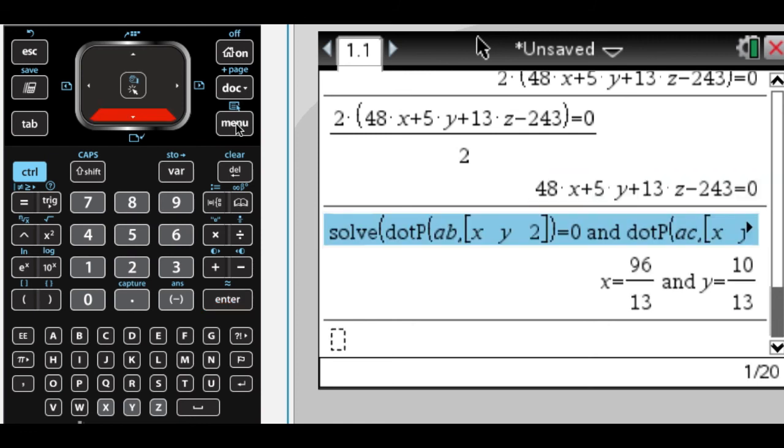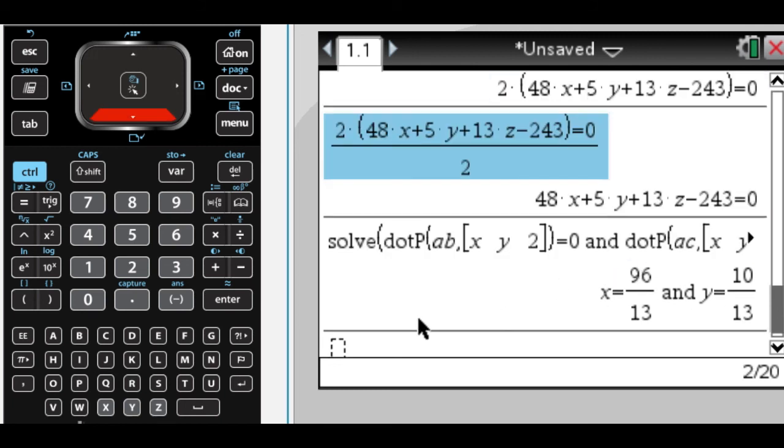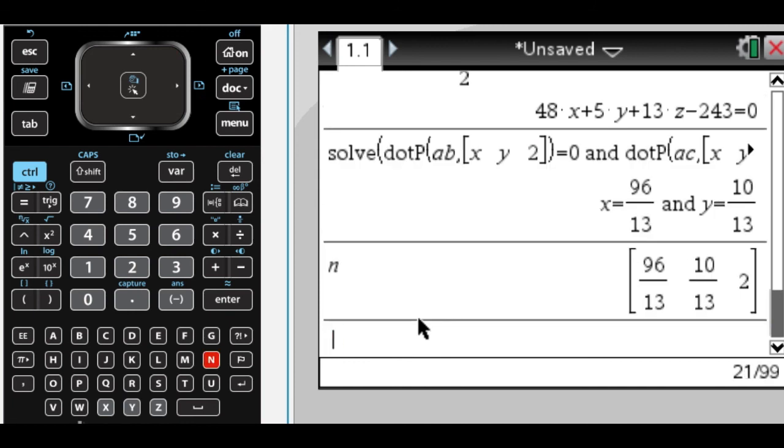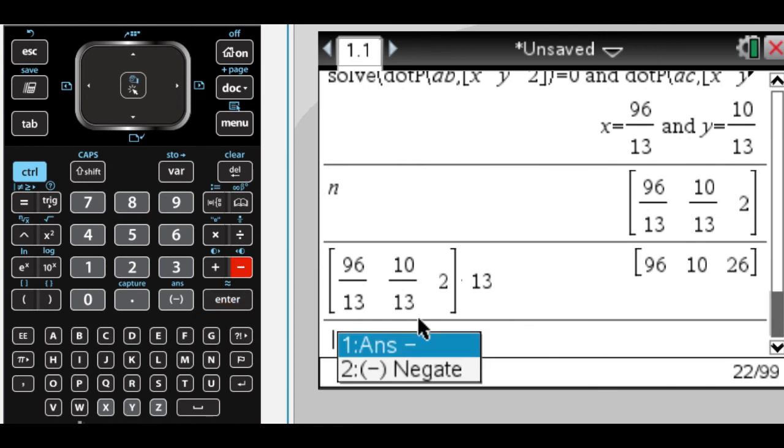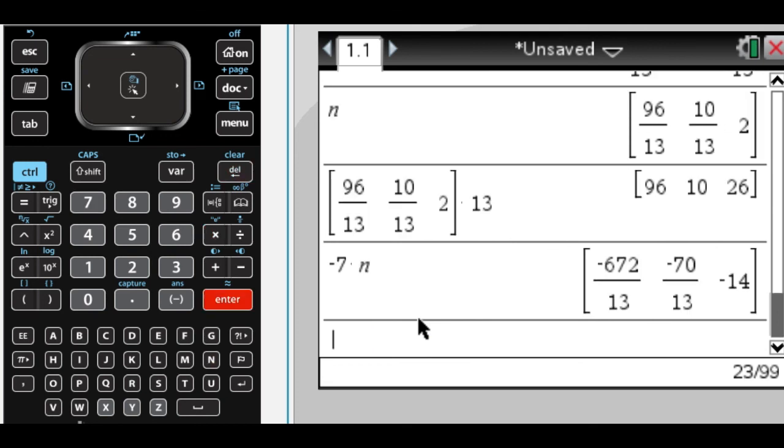What's important to realize is it doesn't really matter what value we choose here for our third value. We're just going to get a scalar multiple of the vector that we ended up with. We could just as easily have ended up with this or -7 times anything, depending on what we chose.